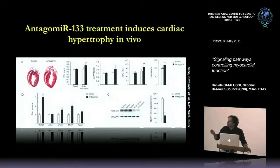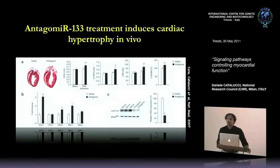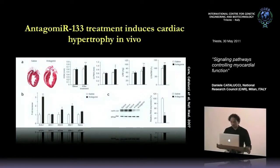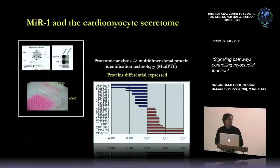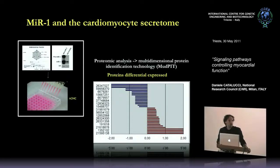Introducing a molecule able to downregulate the microRNA — an antagomir — induces a strong hypertrophic response in the heart. Based on the strong relevance of this microRNA in the heart, we started thinking about whether microRNA controls secreted proteins. We cultured neonatal mouse cardiomyocytes, infected them with an adenoviral vector overexpressing microRNA-1, and subjected the supernatant to proteomic analysis.